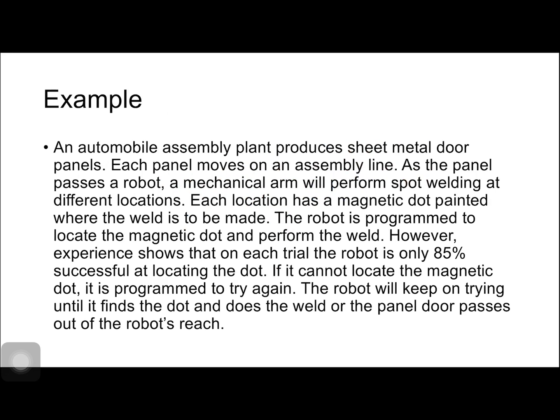For our example problem, an automobile assembly plant produces sheet metal door panels. Each panel moves on an assembly line. As the panel passes a robot, a mechanical arm performs spot welding at different locations. The robot is programmed to locate a magnetic dot and perform the weld. However, experience shows that in each trial, the robot is only 85% successful at locating the dot. If it cannot locate the dot, it is programmed to try again. The probability of success is 0.85.